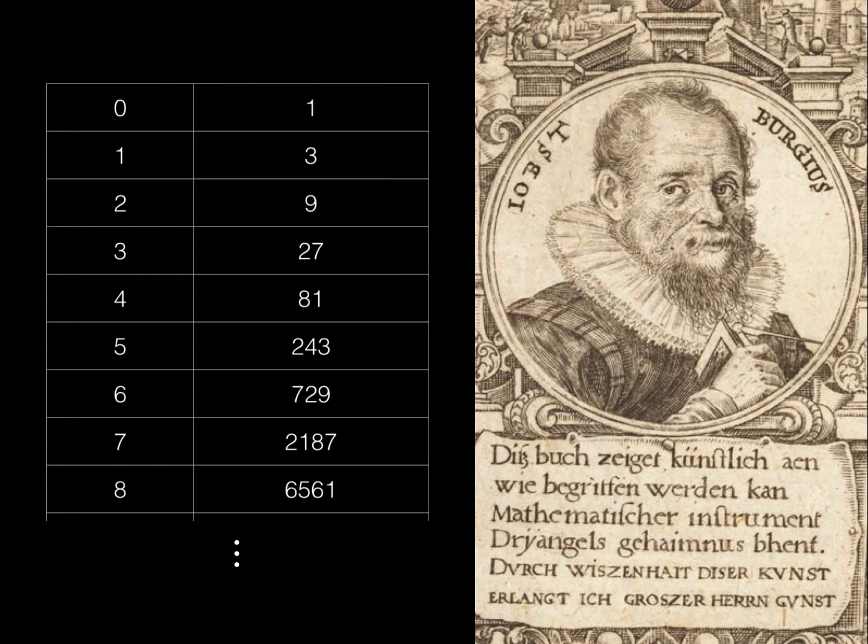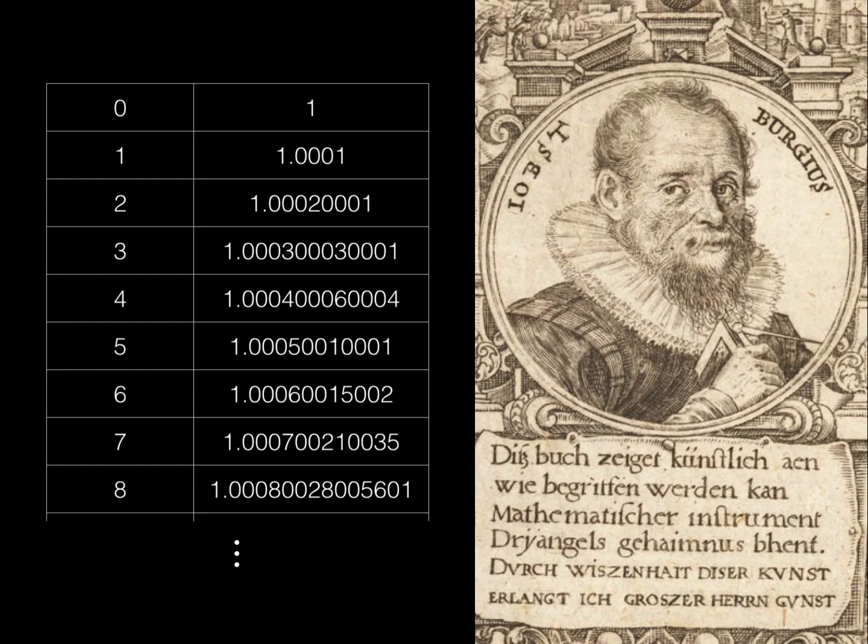Instead of multiplying by a whole number like 10 or 2 or 3, he multiplied by a number just fractionally bigger than 1, like this. The number he used was 1.0001, just 1 plus 1 ten thousandth. Just like in the other table, he kept count on the left. This way,